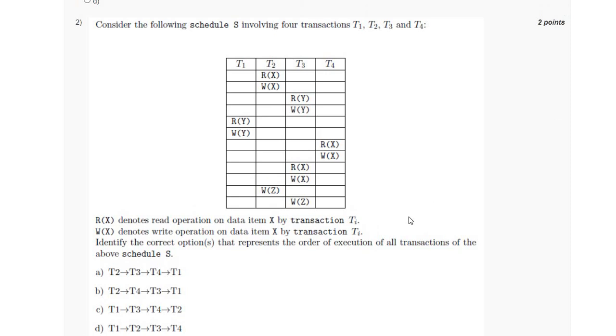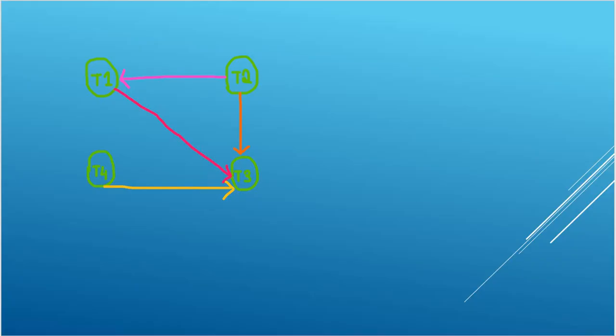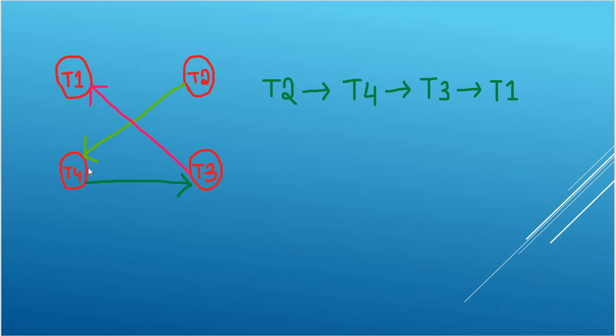For the second question, we have to find the correct representation of the order of execution of the transactions. The precedence graph of the transactions is as follows, and the order in which they execute is: first T2, then T4, then T3, and finally T1, which is option B.